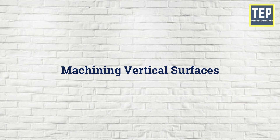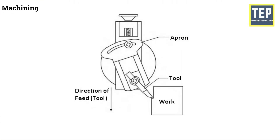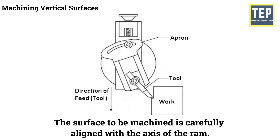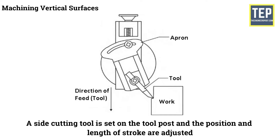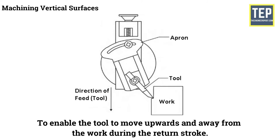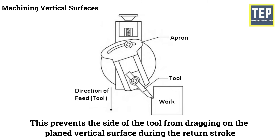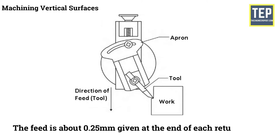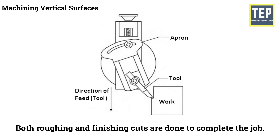Machining vertical surfaces: a vertical cut is made while machining the end of a workpiece, squaring up a block, or cutting a shoulder. The work is attached in the device or directly on the table and the surface to be machined is carefully aligned with the axis of the ram. A side cutting tool is set on the tool post, and the vertical slide is set accurately at zero position so the tool moves upward and away from the work during the return stroke. The down feed is given by rotating the down feed screw by hand, with a feed of about 0.25 millimeters given at the end of each return stroke. Both roughing and finishing cuts are done to complete the job.